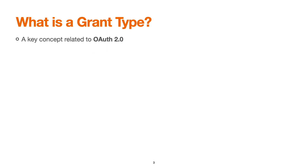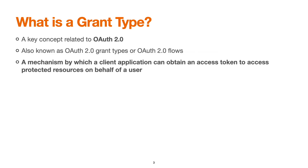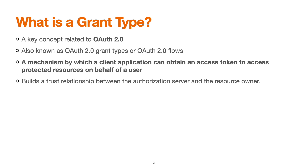So what is a grant type? A grant type is typically a concept related to OAuth 2.0, which is an open authorization standard. It is also known as OAuth 2.0 grant types or OAuth 2.0 flows. It's a mechanism with the help of which a client application can obtain an access token to access protected resources on behalf of a user, building a trust relationship between an authorization server and the resource owner.